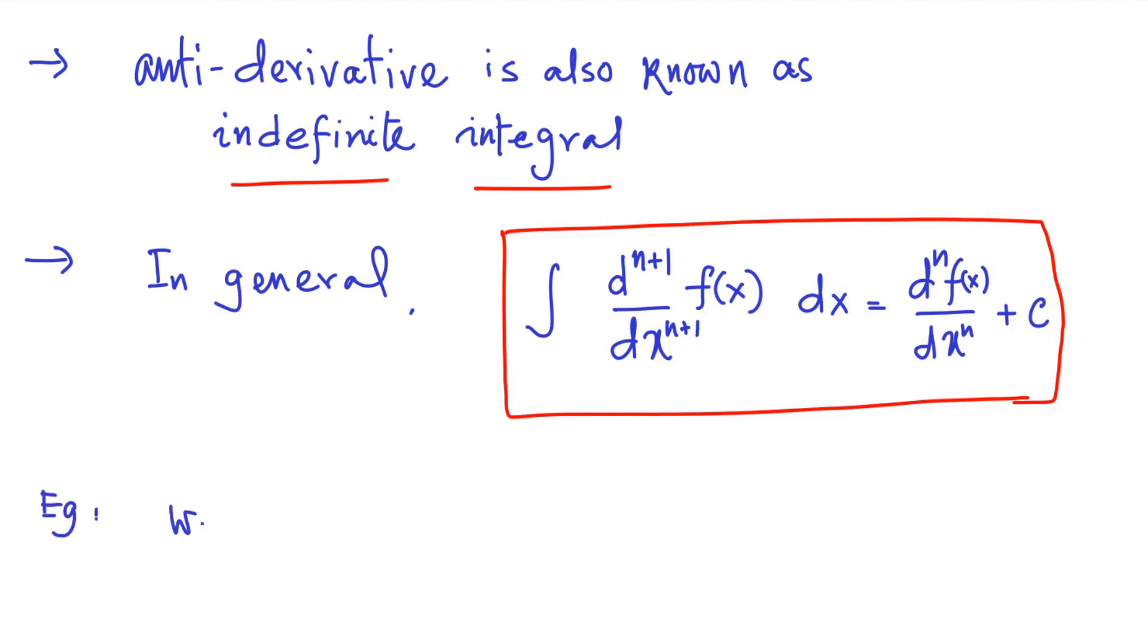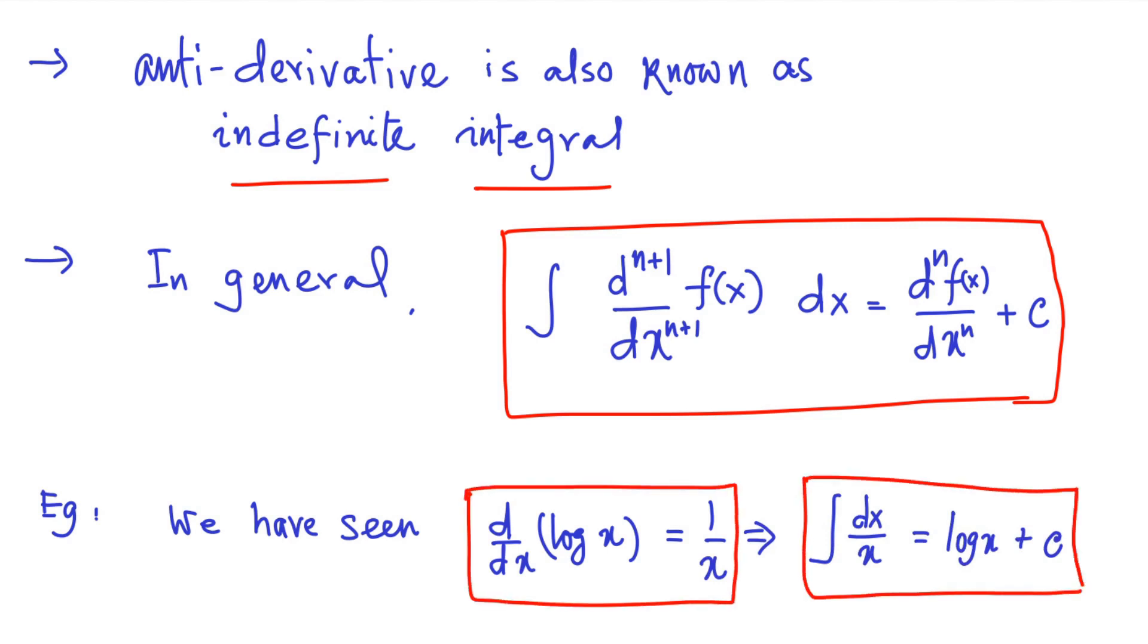For example, earlier we have seen that derivative of log of x is 1 over x. Given this derivative, one can define an antiderivative of 1 over x, namely integration of 1 over x dx as log x plus a constant of integration.